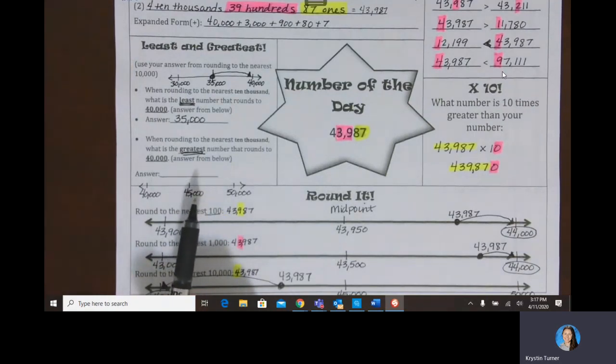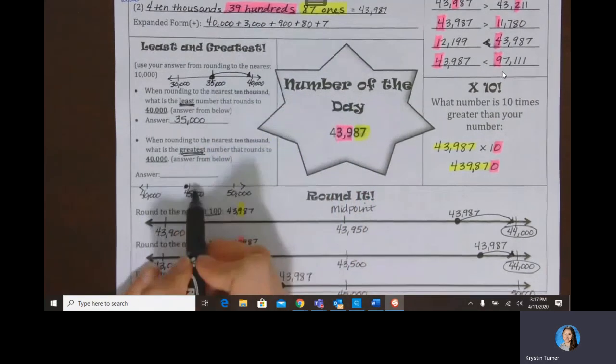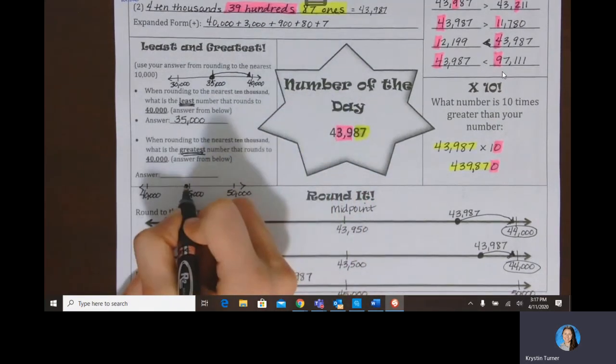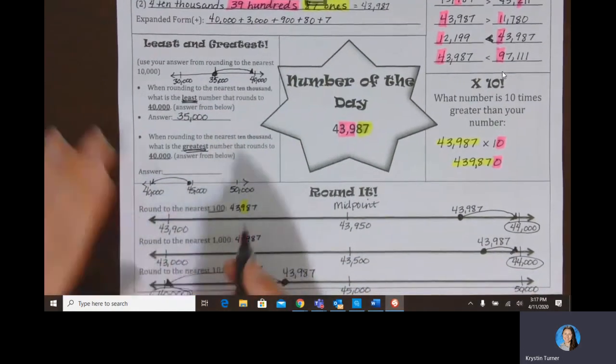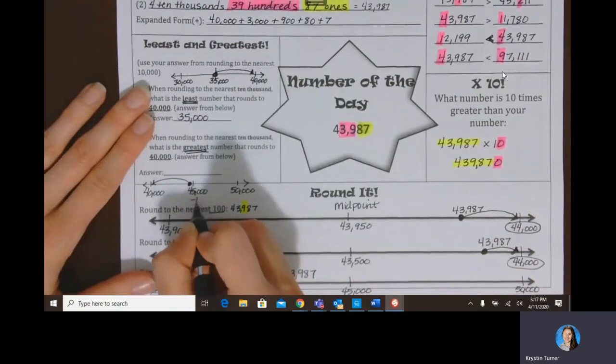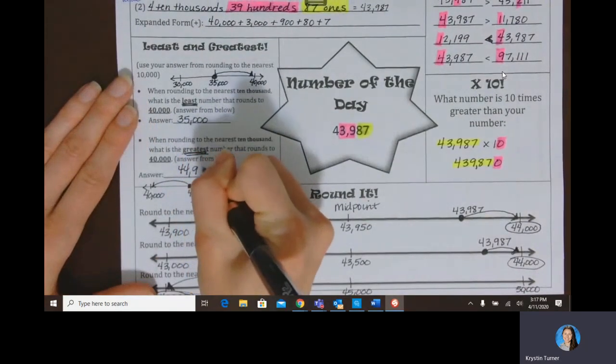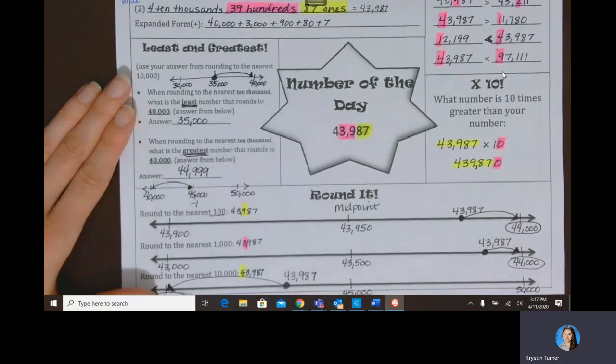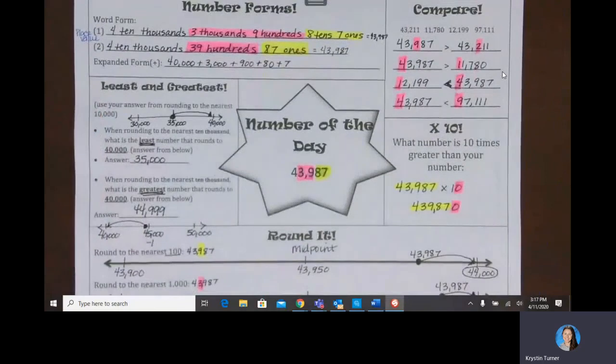My answer is the one right next to 45,000. Whatever this number is, is the biggest number that rounds back down to 40,000. So that number is one less than our midpoint, or 44,999. And that is your number of the day for 43,987.